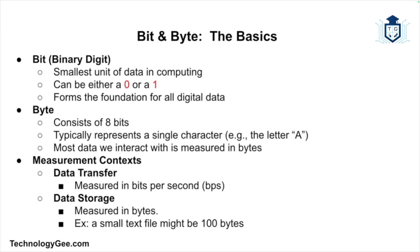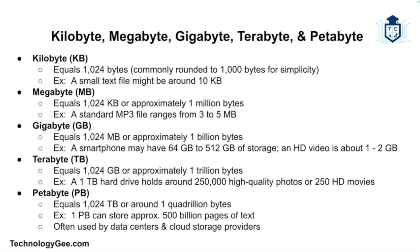Let's start with the most fundamental units in computing: the bit and the byte. A bit is short for binary digit and it's the smallest unit of data in computing — it can have a value of either zero or one, so think of it as the basic building block for all digital data. A byte is a collection of eight bits and is typically enough to represent a single character like the letter A or a punctuation mark. Most data we interact with on computers is measured in bytes. For example, a text file containing a short message might be around 100 bytes. Data transfer speeds are measured in bits per second, while data storage is generally measured in bytes.